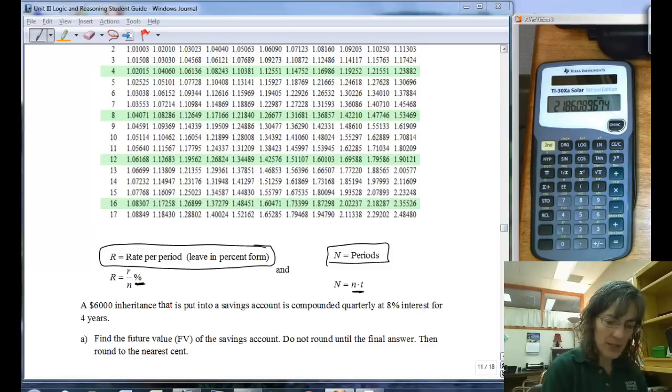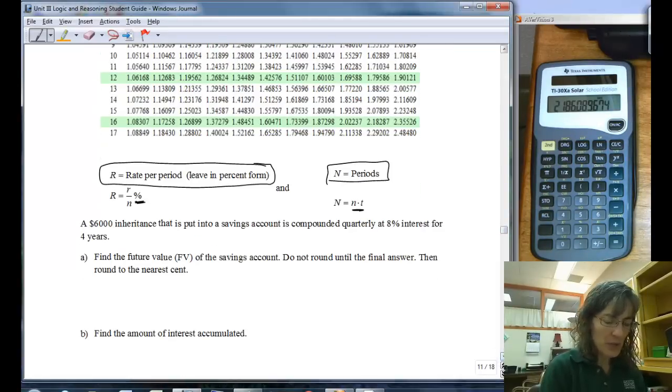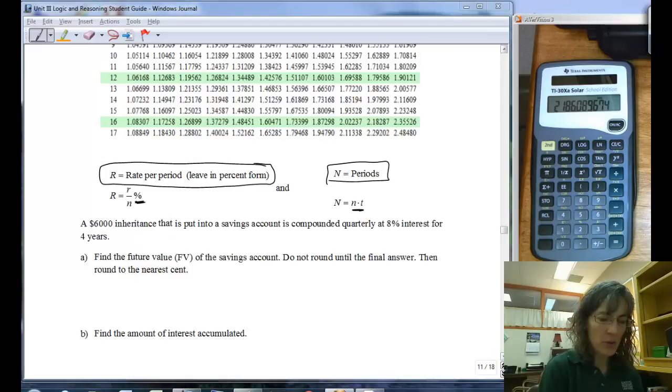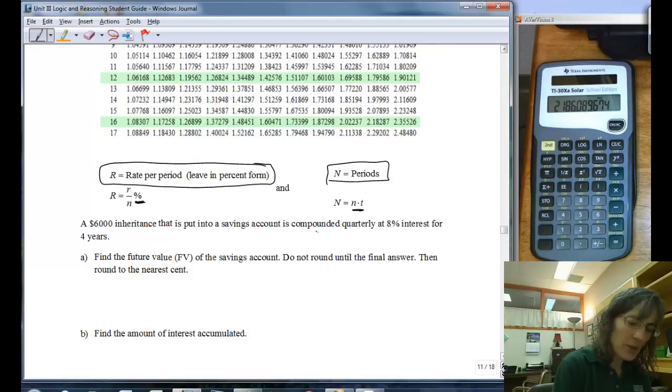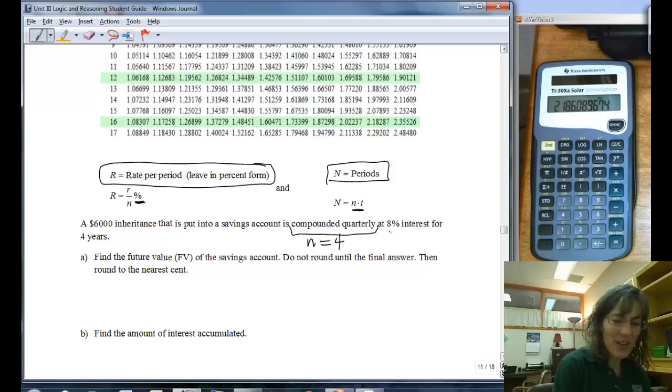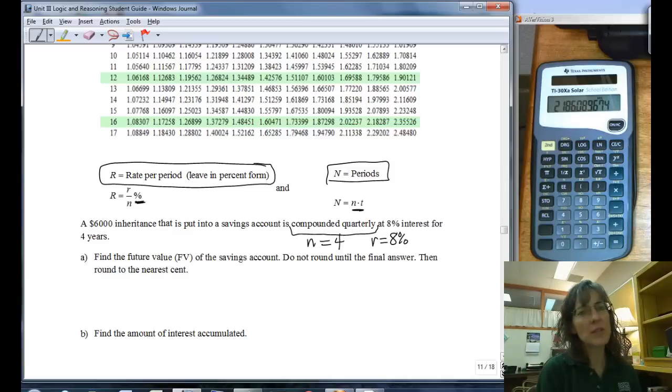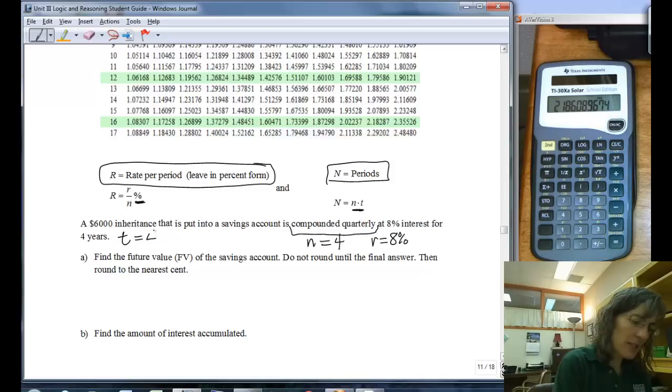A $6,000 inheritance is put into a savings account compounded quarterly. That means my n is four times a year. And an 8% interest, so that means my r for this problem, I'm going to leave it as a percent because I'm using the table. And for four years, so my little t is going to be four. And the $6,000 is the amount I'm putting into the savings, so that's going to be my principal.